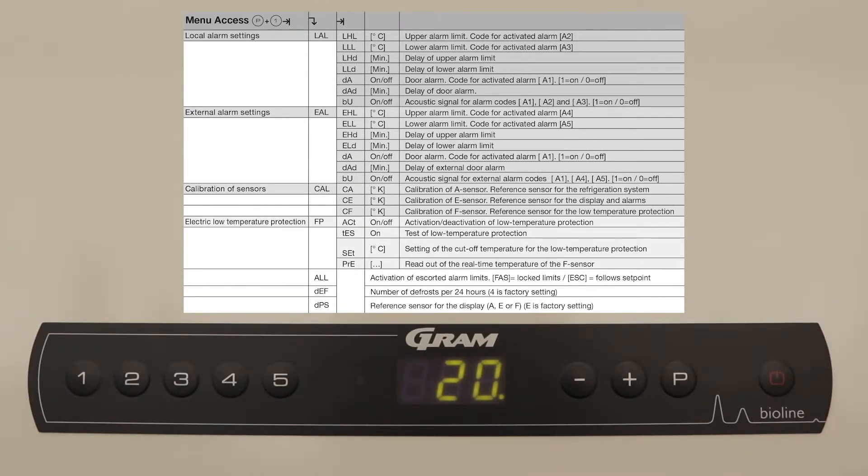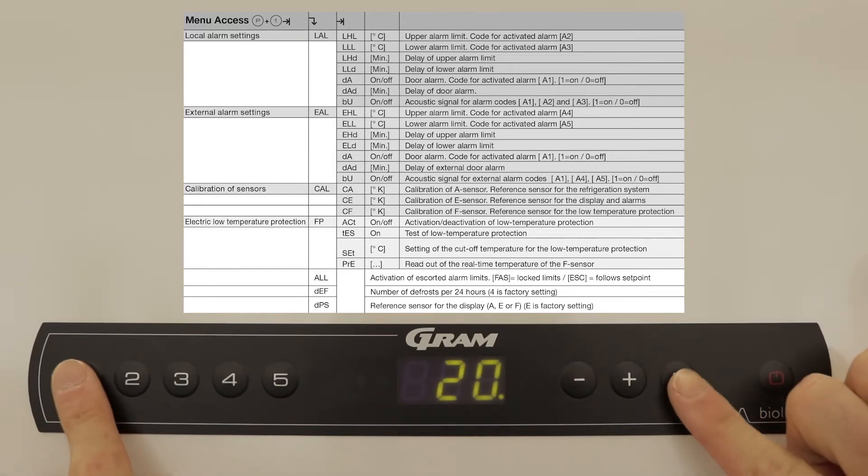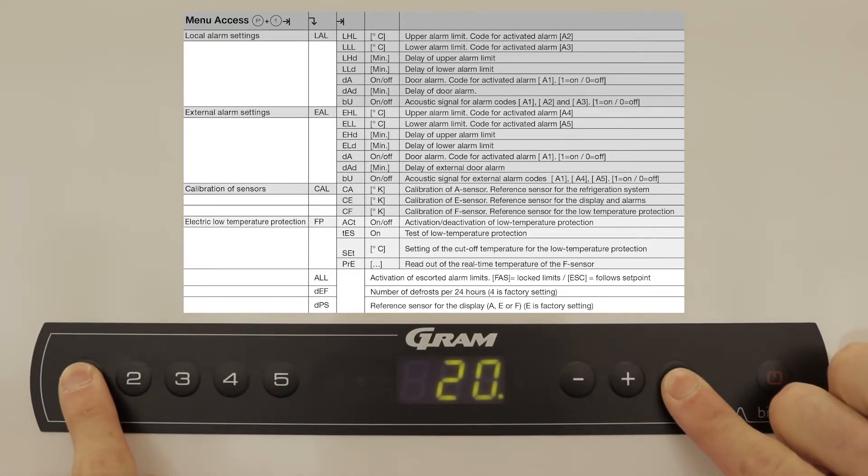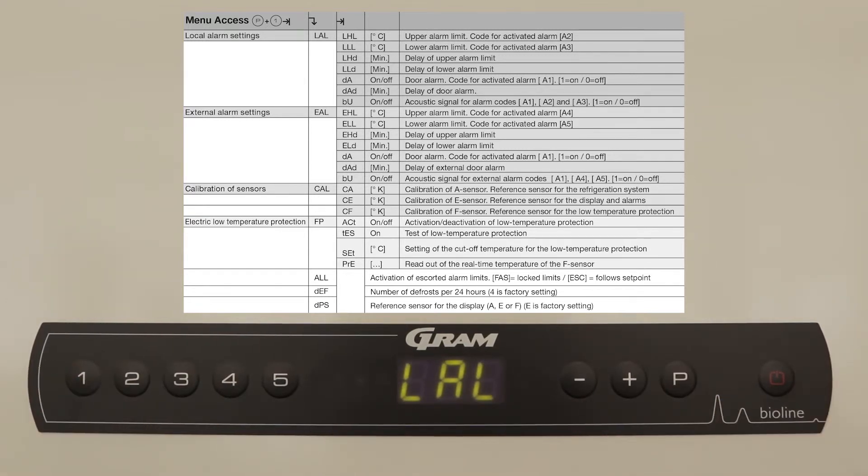We will be concentrating on the standard setup of the local and external alarm settings. Open the menu by pressing and holding P and 1 together for 3 seconds. Navigate to local alarm settings and press P to select.